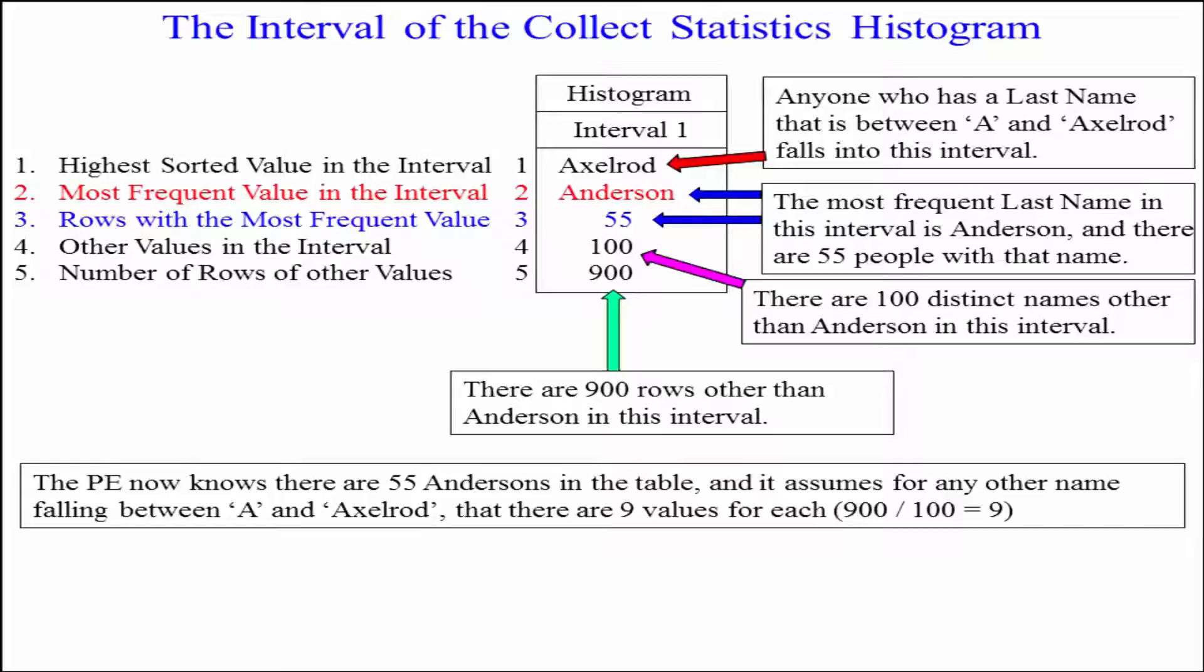Secondly, we see the name Anderson. Anderson was the most popular name in interval one. There were 55 people in this interval named Anderson.